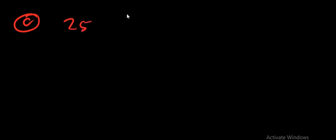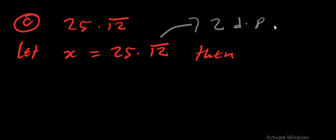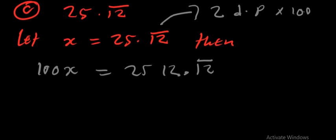The next one is 25.12̄. As usual, let X = 25.12̄. We count the number of decimal places — here we have two decimal places — so we multiply by 100. Then 100X = 2512.12̄, because 12 is the part that is repeating itself.